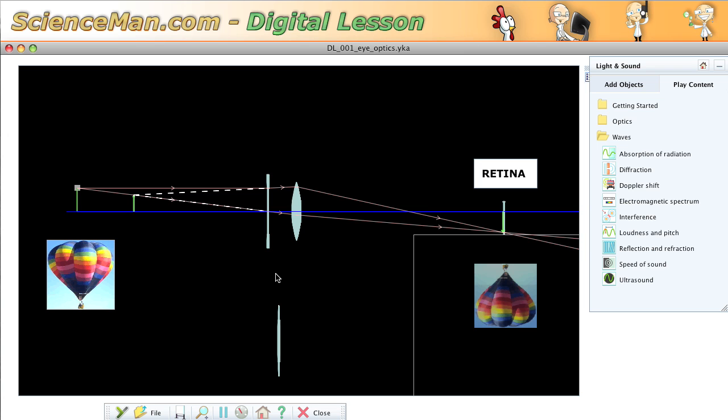So if we have a nearsightedness problem we can correct it using a diverging concave lens which spreads the light out before it reaches your real lens in your eye, and then the light focuses properly on the retina and that's an interesting solution for the problem of nearsightedness.